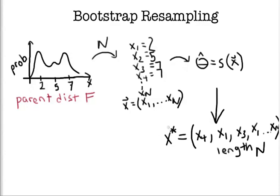I'll denote this as the first bootstrap resample we've done. From this bootstrap resample we can apply the same estimator and compute s of x1 star.